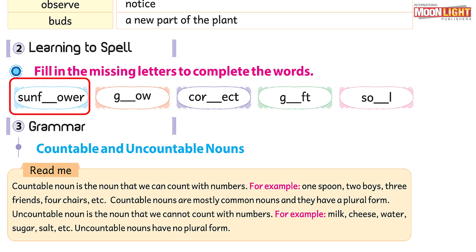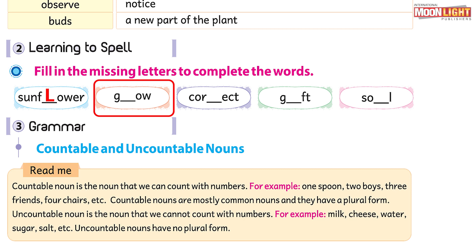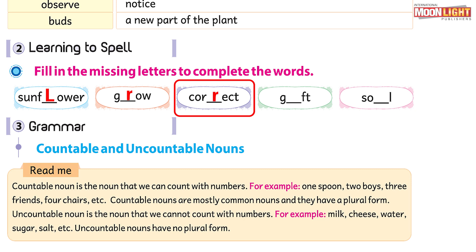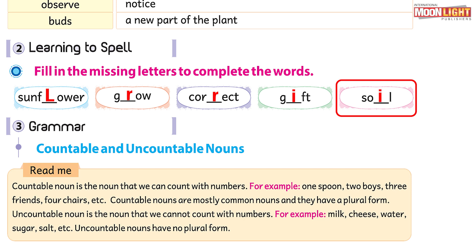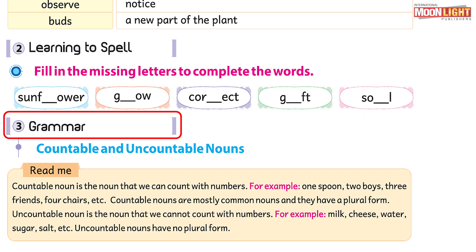Sunflower — complete this word by putting the letter L in it. Next, the word 'grow' — listen carefully and observe which letter is missing. There is an R sound, but R is not written in this word, so write R to complete it. In the correct word there are two R's — one is written and one is missing. Complete this word by writing R. Next, 'gift' — I is missing. And 'soil' — I is also missing in it. Let's move to our grammar part.